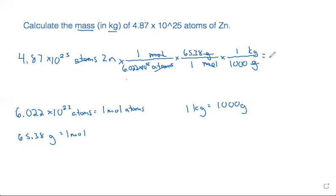So we multiply by the numbers on top and divide by the numbers on bottom. 4.87 EE 25 divided by 6.022 EE 23 times 65.38 divided by a thousand. That gives me 5.28728 kilograms.